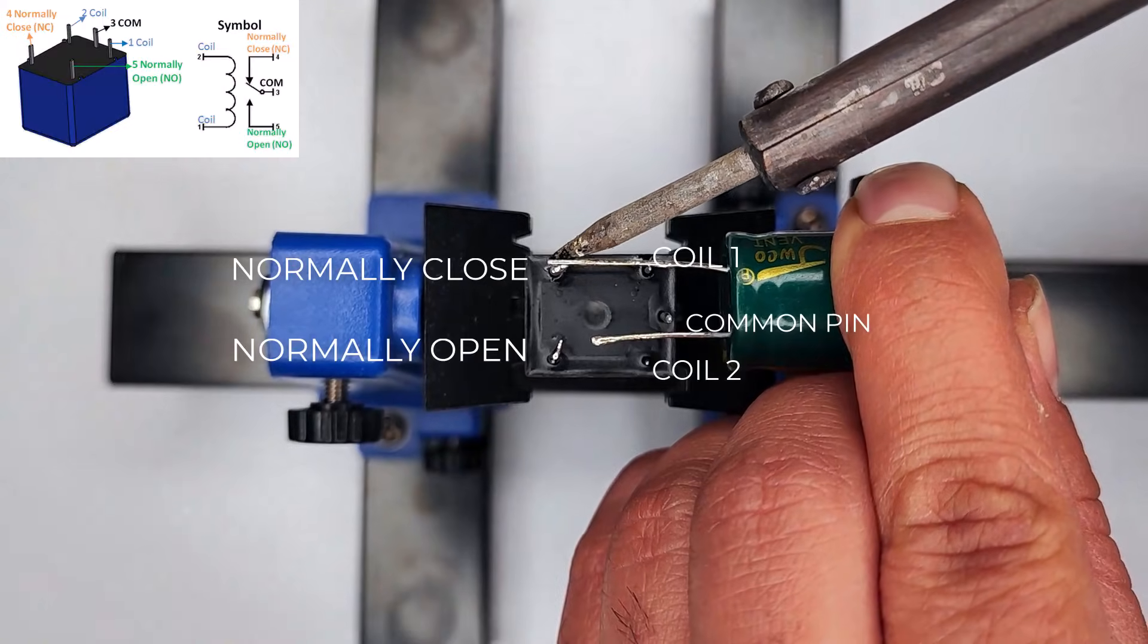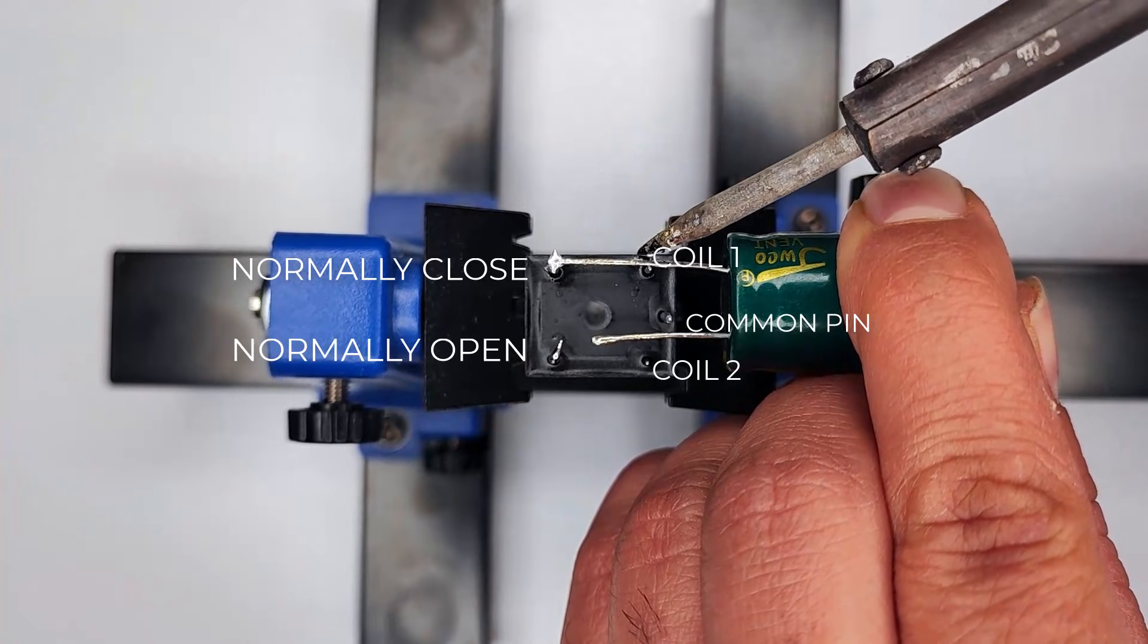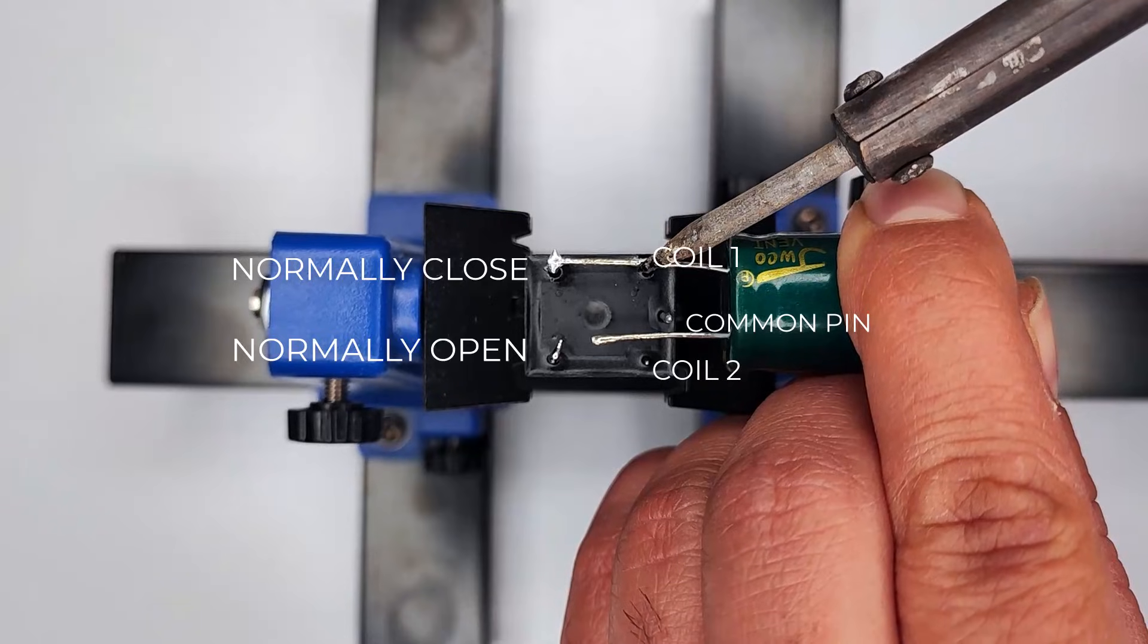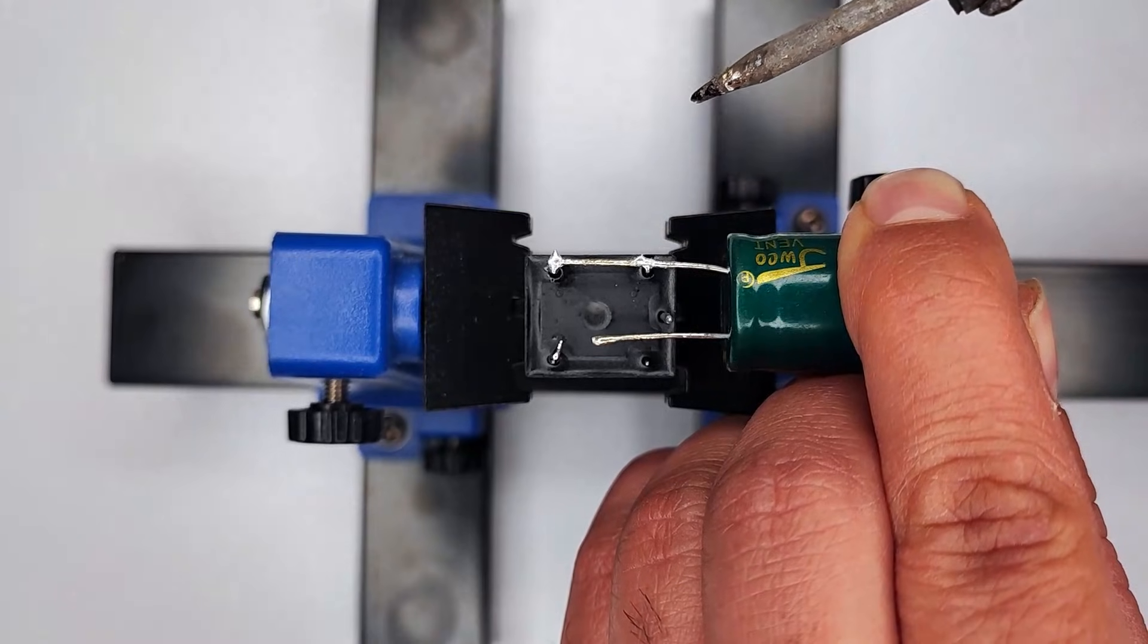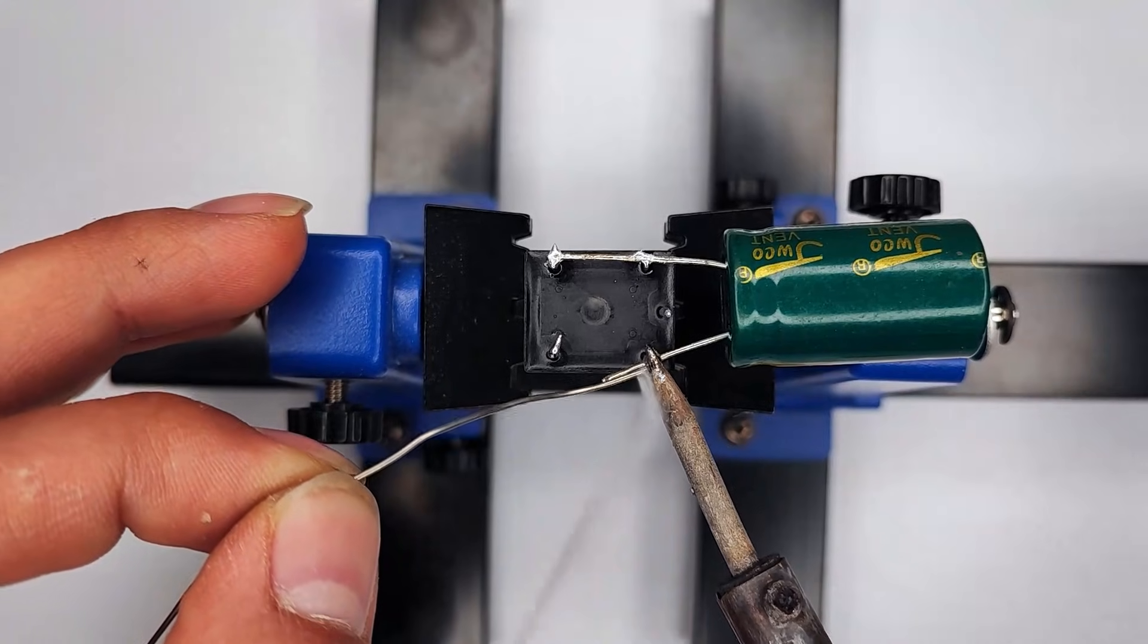So with a typical relay coil of around 300 to 400 ohms and a 3300 microfarad capacitor, your blink time roughly lands around T approximately 0.3 to 1.3 seconds, depending on coil specs and supply voltage.